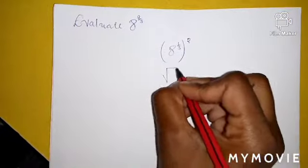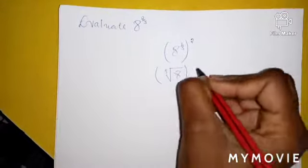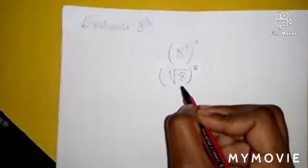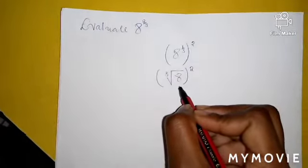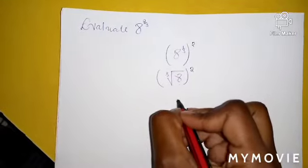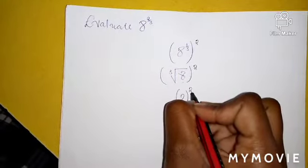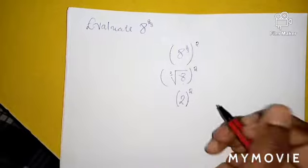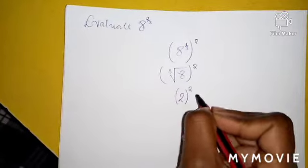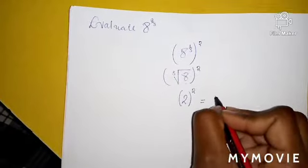So the cube root — we write it as the cube root symbol. Everything must be raised to the power 2. We look for a number that multiplies itself three times to get 8. That number is 2. So 2 to the power 2. We've found the cube root of 8, which is 2, raising it to the power 2. Hence, 2 to the power 2 is equal to 4.